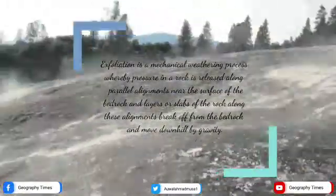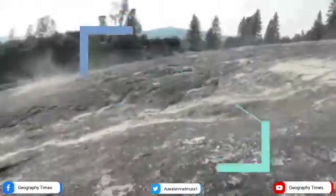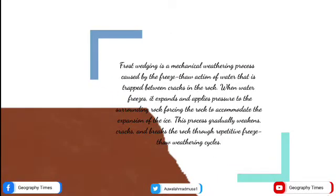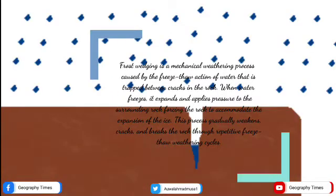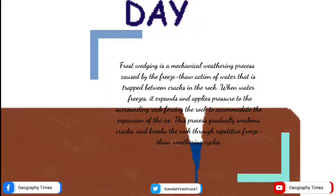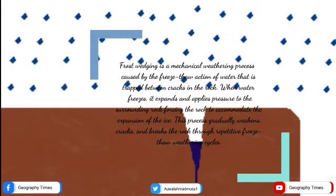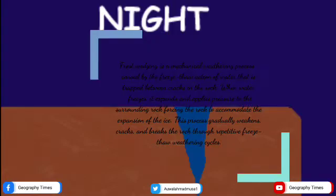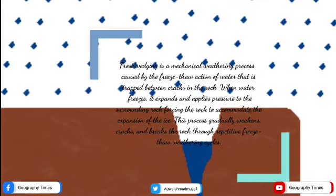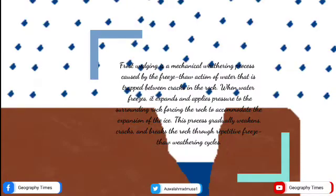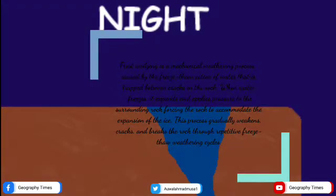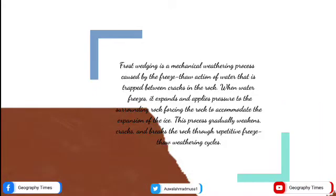The next form of physical weathering is frost wedging. Frost wedging is a mechanical weathering process caused by the freeze-thaw action of water that is trapped between cracks in the rock. When water freezes, it expands and applies pressure to the surrounding rock, forcing the rock to accommodate the expansion of the ice. This process gradually weakens, cracks, and breaks the rock through repetitive freeze-thaw weathering cycles.